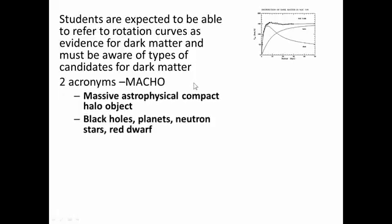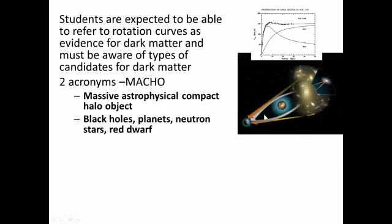We have two acronyms that you need to know. One is called MACHO. This stands for Massive Astrophysical Compact Halo Object. An example would be very large objects: black holes, planets, neutron stars, red dwarfs, things that are not emitting radiation. And we do know that they exist.